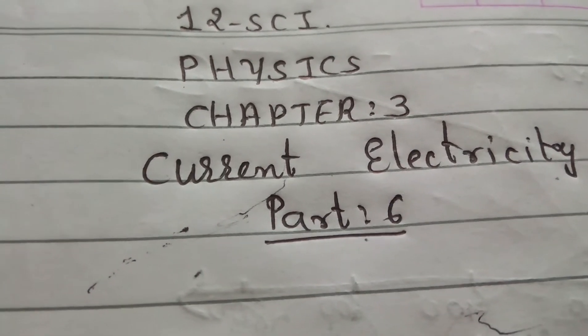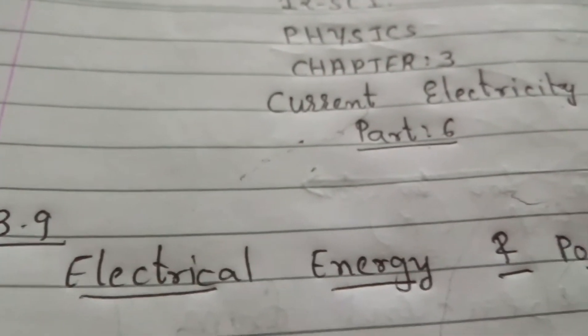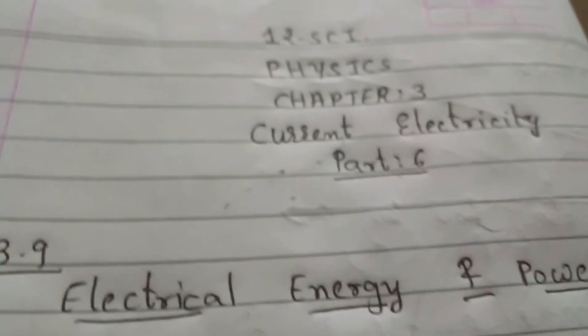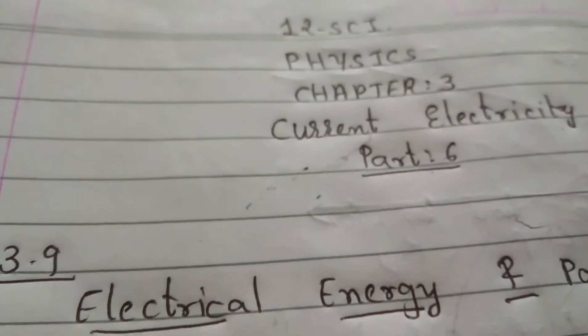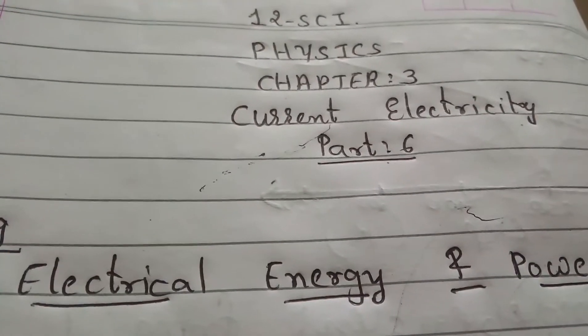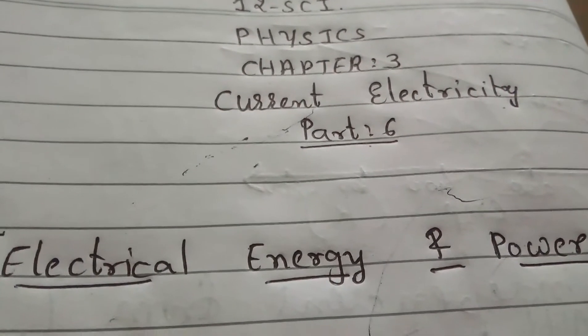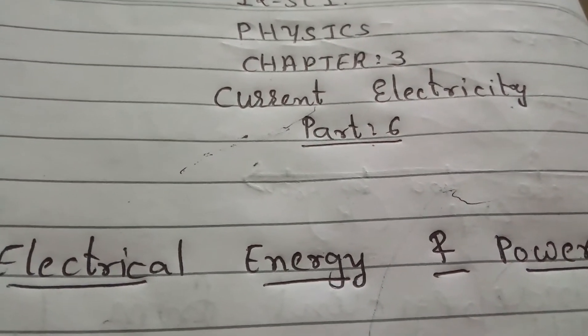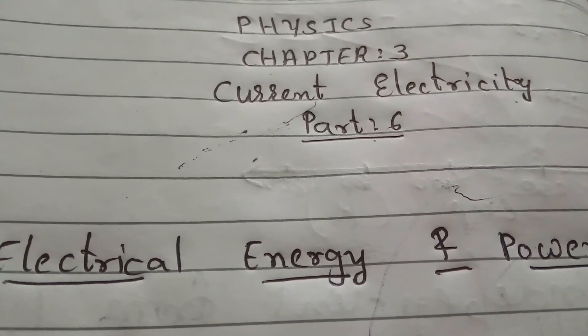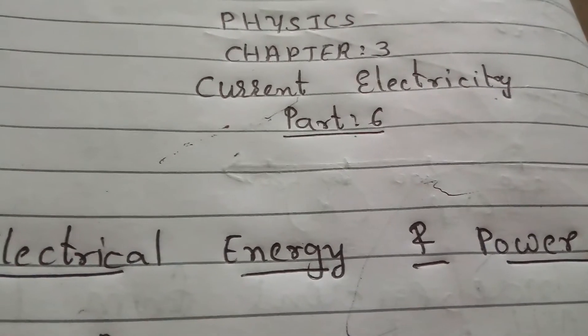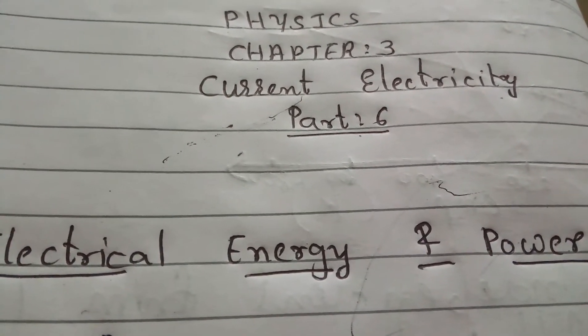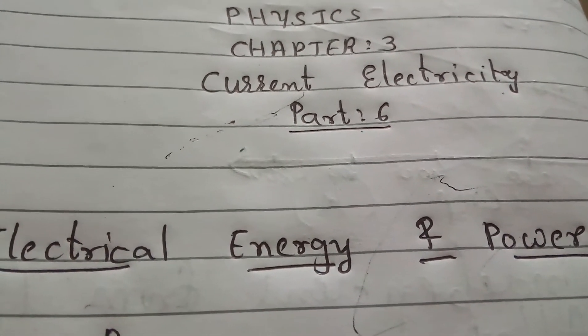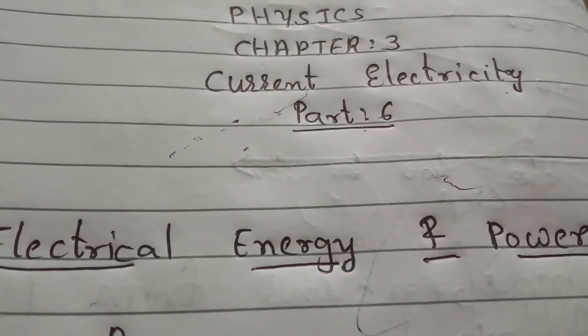Today we will discuss about electrical energy and power, topic number 3.9. In 11th standard, we discussed about power. The definition of power is energy per unit time, or work per unit time.